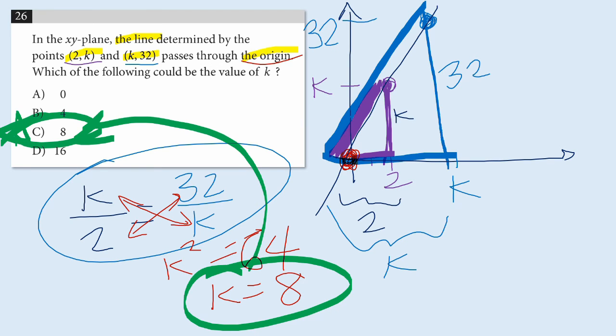So I hope you enjoyed seeing this strategy. The key is that even if you have incomplete information, and in this case, we didn't know what k is, you can draw a picture to visualize the relationship between the parts. And here was the relationship between the purple line segment and the blue line segment, knowing that those two slopes are going to be equal. That allowed us to create an equation and easily solve for k.